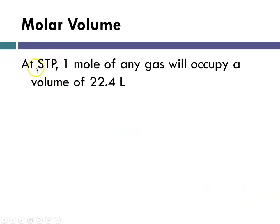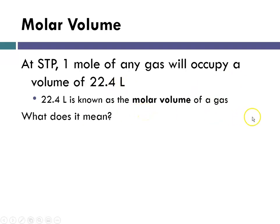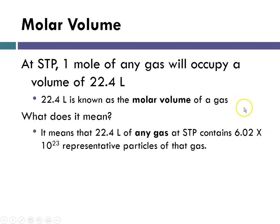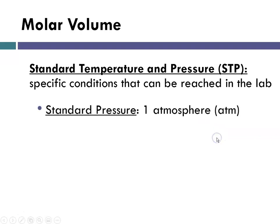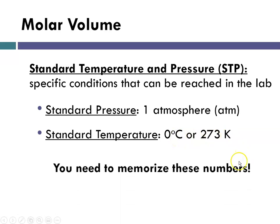So at STP, one mole of any gas has a volume of 22.4 liters. 22.4 liters is known as the molar volume of a gas. What does that mean? It means that 22.4 liters of any gas at standard temperature and pressure contains 6.02 times 10 to the 23rd particles of that gas, and that means that's one mole of a gas. So if I give you 22.4 liters of a gas, I'm giving you a mole of the gas. So what are these STP conditions? Standard temperature and pressure are agreed to be the specific conditions that you can reach in lab where standard pressure is 1 atmosphere, abbreviated ATM, and standard temperature is 0 degrees C, which is the same as 273 Kelvin. You need to memorize these numbers.